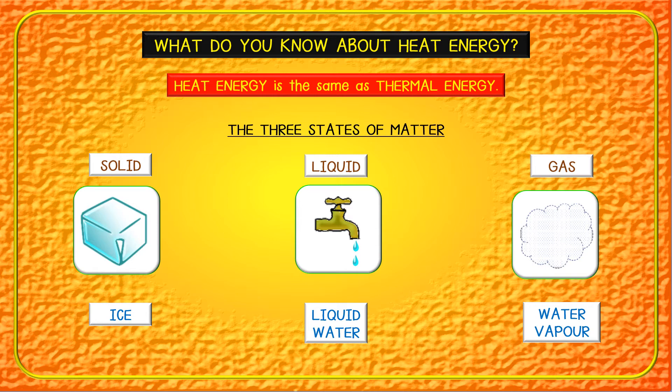The gas form of water is water vapor. Remember that water vapor is not the same as steam. Water vapor is not visible and is around us all the time. Steam is visible and only present in parts of the atmosphere like the clouds in the sky.